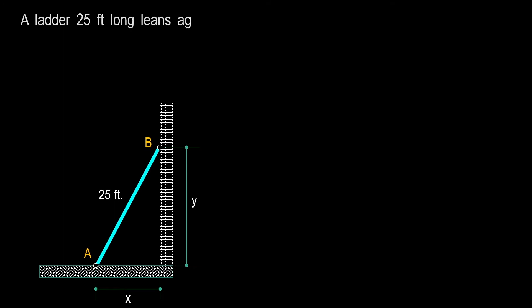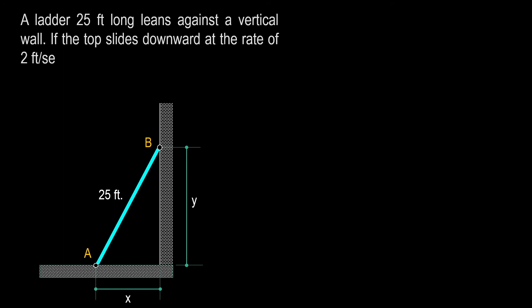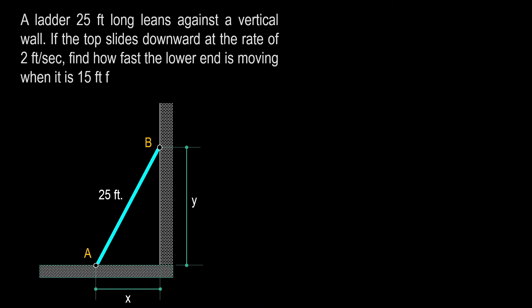A ladder 25 feet long leans against a vertical wall. If the top slides downward at a rate of 2 feet per second, find how fast the lower end is moving when it is 15 feet from the wall. Based on the problem, the length of the ladder is 25 feet long and is constant. The variables here are the length Y, because the top — point B — slides downward at a rate of 2 feet per second, meaning Y is changing through time at 2 feet per second.